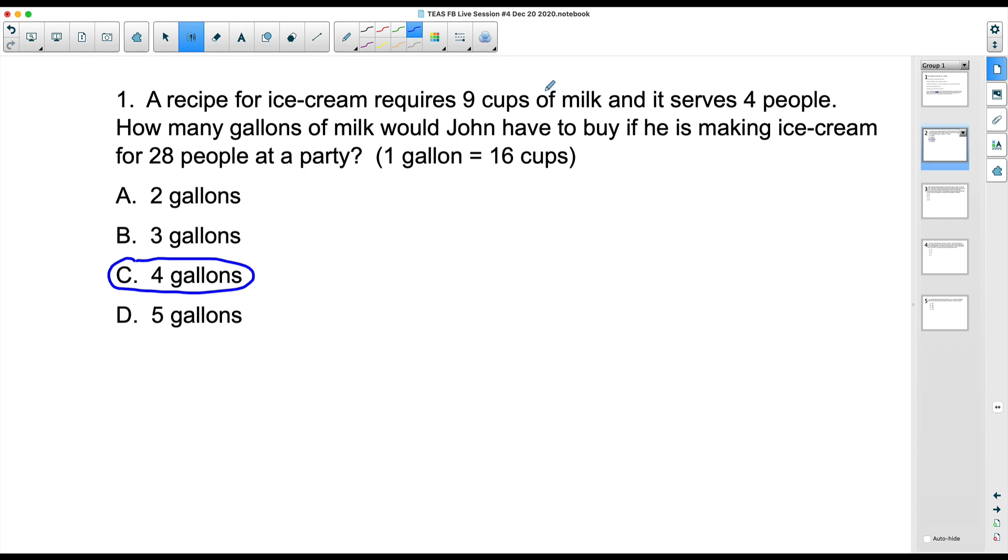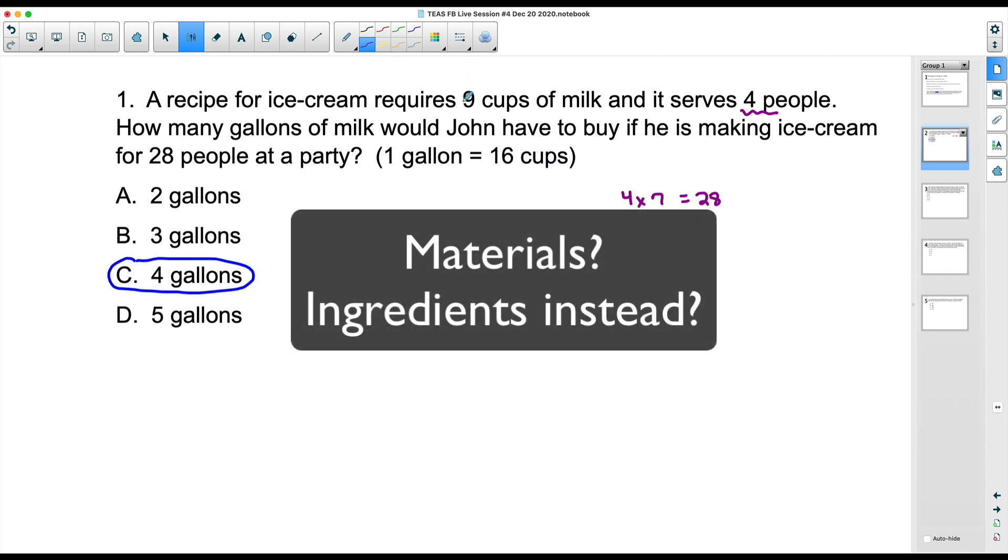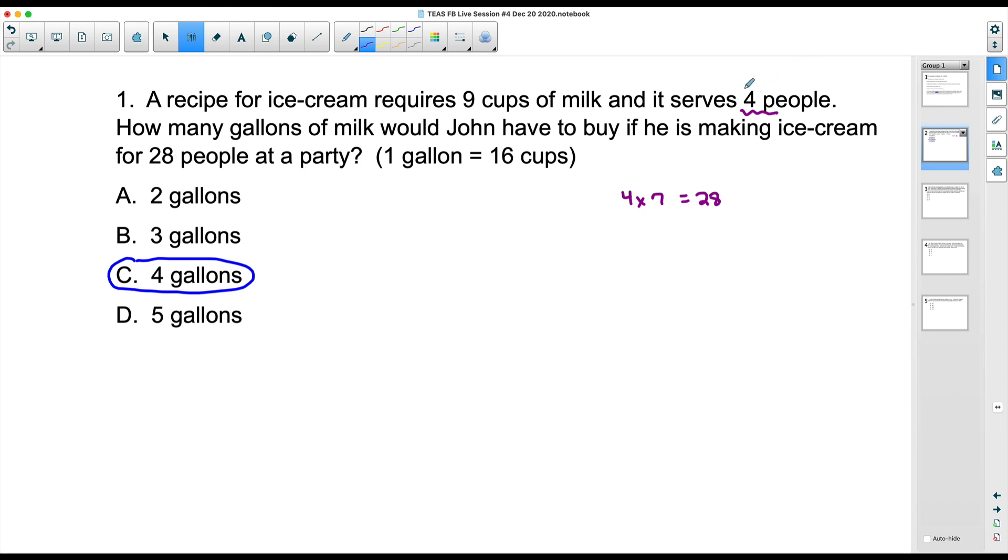A few things here, nine cups of milk. That's how much milk it takes to make this ice cream. And this recipe serves four people. Well, John needs to serve 28 people at a party. So one thing that goes to my brain is we're definitely going to need more milk than this because that only serves four people. As a matter of fact, we're going to need seven times as much. Notice it serves four people. And if we take four times seven, we get 28. So we essentially have to make seven times as much or get seven times as many materials, in this case milk, to serve these 28 people. Again, because that recipe only serves four, 28 is seven times as many. So with that in mind, if nine cups serves four people, I'm going to take nine and I'm going to multiply that by seven as well. And this gives us 63. So this 63 represents cups. It's going to take 63 cups of milk to make this recipe that's going to serve 28 people.